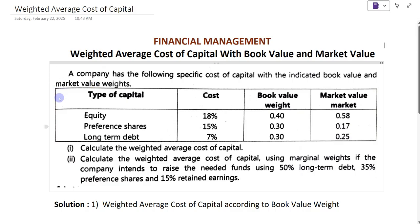This is the example on the screen. A company has the following specific cost of capital with the indicated book value and market value weights. The types of capitals are equity, preference shares, and long-term debt. The cost of each capital is: equity 18%, preference shares 15%, long-term debt 7%. The book value weights are: equity 0.40, preference shares 0.30, long-term debt 0.30. The market value weights are: equity shares 0.58, preference shares 0.17, long-term debt 0.25.